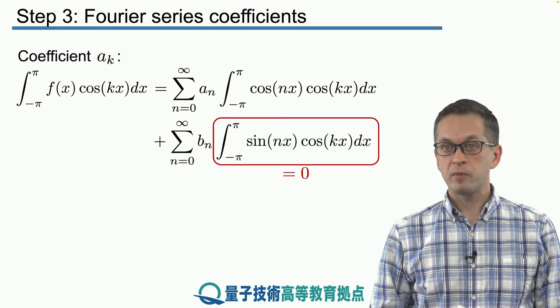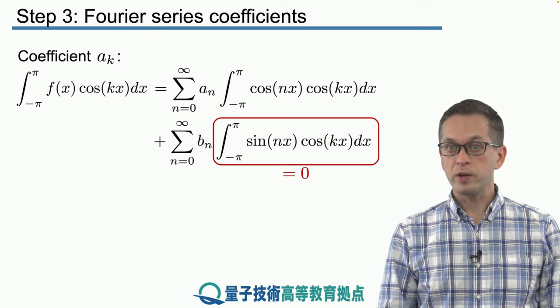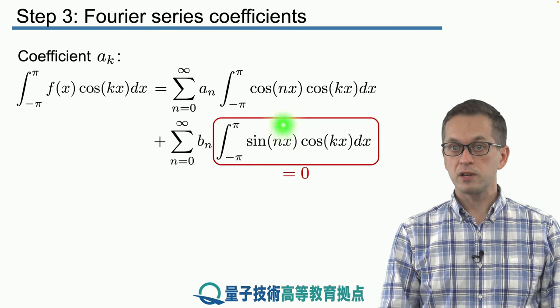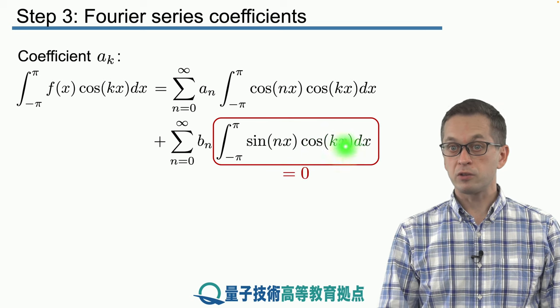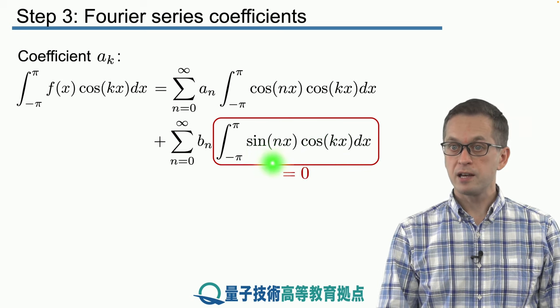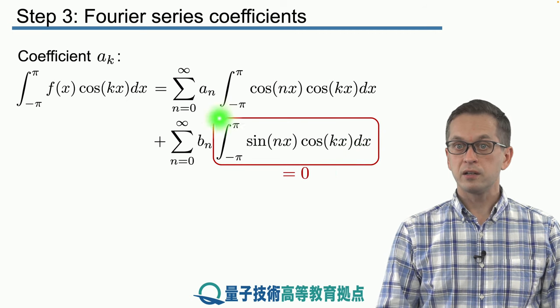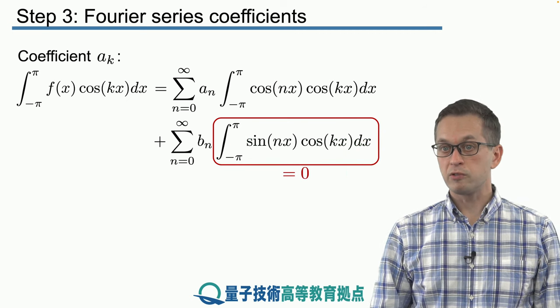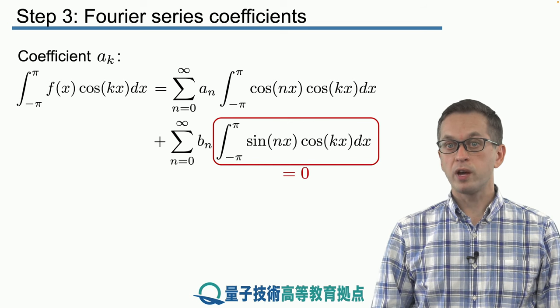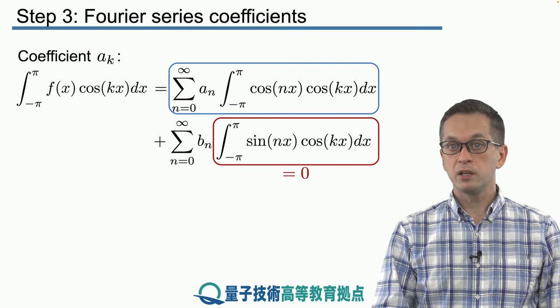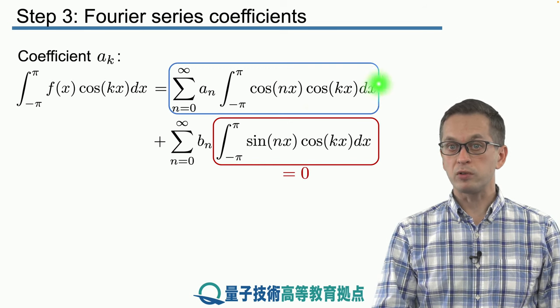Immediately, just by remembering what we derived in the previous step, we can see that these two functions cosine(kx) and sine(nx) are orthogonal for any n and any k, meaning that this entire sum, the integral goes to 0. So all we have to do is evaluate the integral inside this blue box up here.